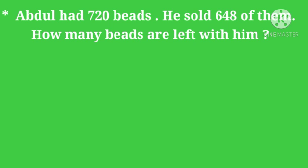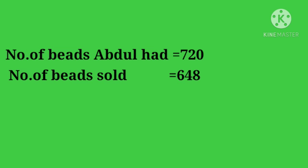Next exercise: Abdul had 720 bits. He sold 648 of them. How many bits are left with him? What is given? Number of bits and number of bits sold. What do you have to find? How many bits are left — left means subtraction. Number of bits Abdul had is equal to 720. Number of bits sold is equal to 648. So 720 minus 648.